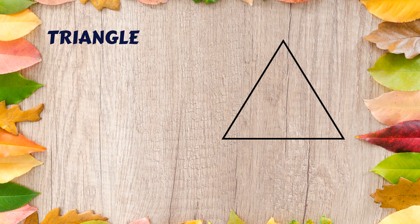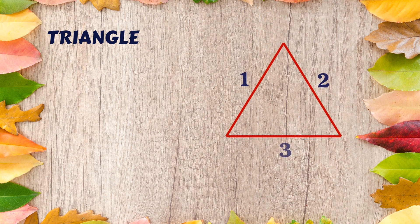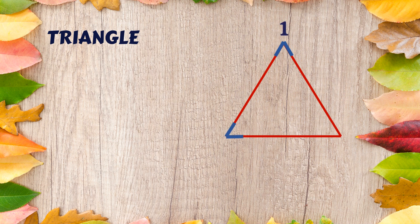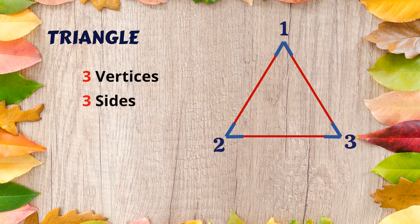Triangle. Let's count the sides. One, two, three. A triangle has three sides. Let's count the vertices. One, two, three. A triangle has three vertices and three sides.